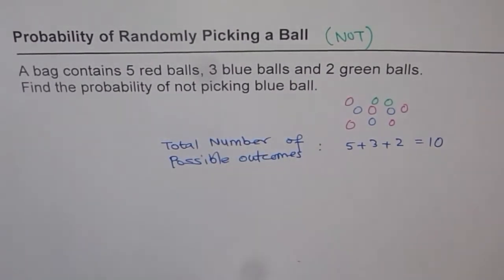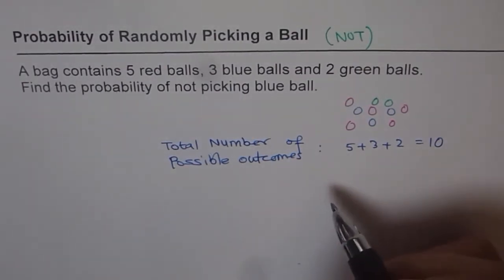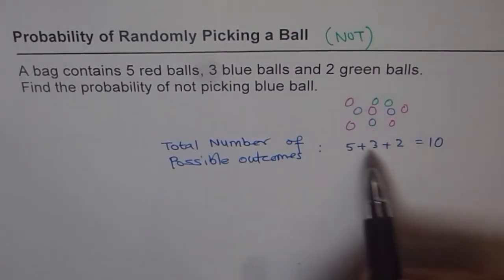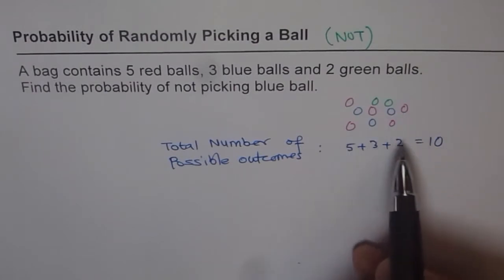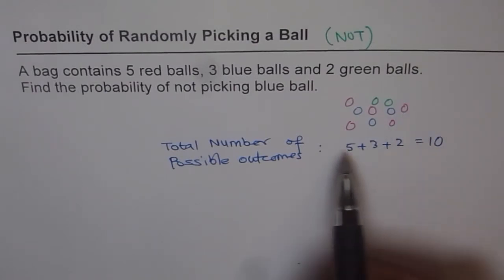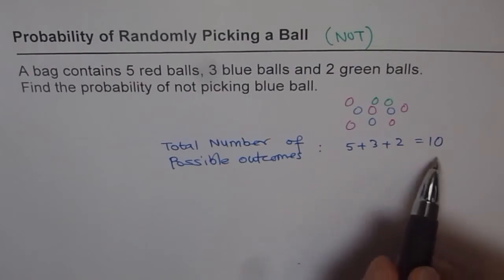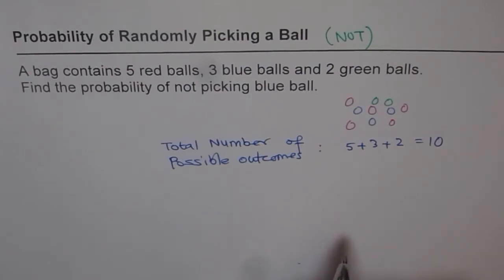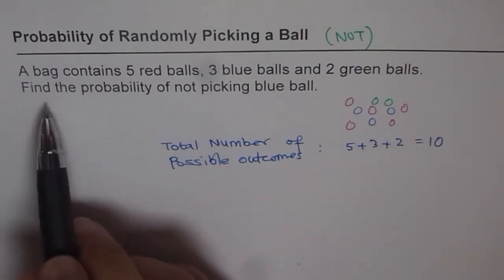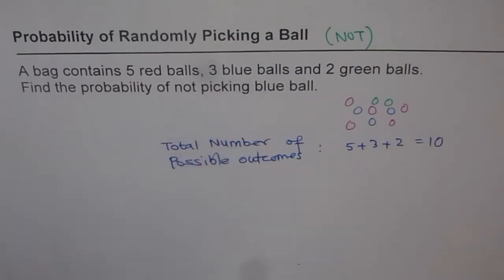What I am trying to say here is that if you pick something from this bag, it could be either of these ten balls. So these are all possible outcomes — there are ten outcomes. Now the question is: find the probability of not picking a blue ball.